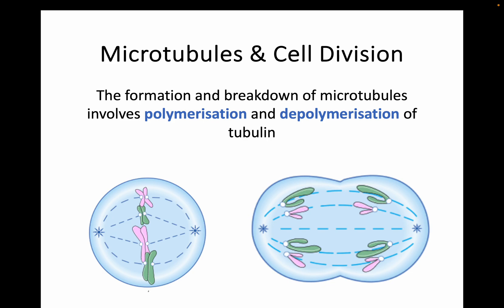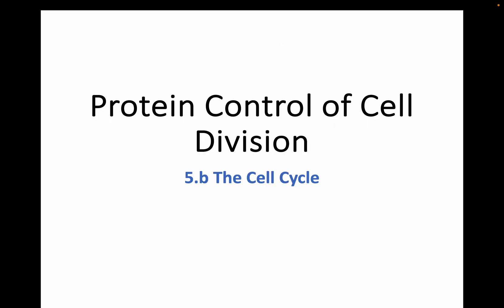We did talk about spindle fibres — these microtubules radiating out. They collect the chromosomes and move back to the poles. The formation of these microtubules involves polymerization when they're going to grow out, and then depolymerization of tubulin when they're going to head back. So these microtubules move around organelles, they move around chromosomes, going through polymerization and then depolymerization.